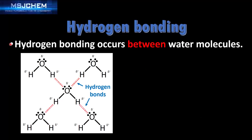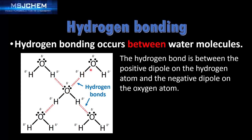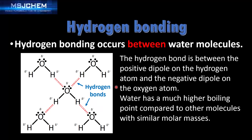Hydrogen bonding occurs between water molecules. Here you can see the hydrogen bonds between molecules of water. The hydrogen bond is between the positive dipole on the hydrogen atom and the negative dipole on the oxygen atom. Water has a much higher boiling point compared to other molecules with similar molar masses, and this is all due to the strength of the hydrogen bonds between the water molecules.